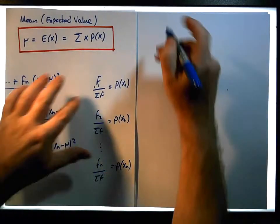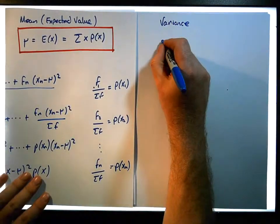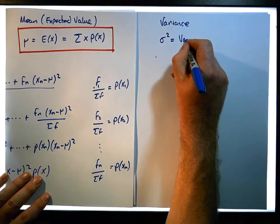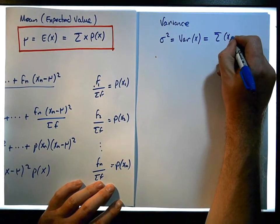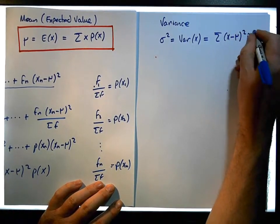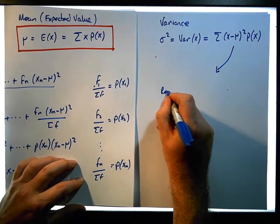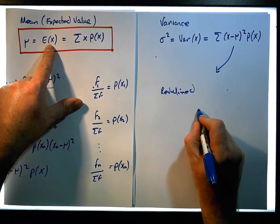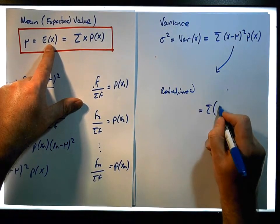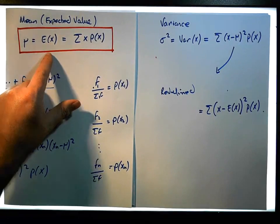So here is the variance formula for a discrete distribution. The variance, sigma squared, also written as Var(x), equals the sum of (x minus mu) squared times P(x). Since mu is the expected value of x, this can also be written as the sum of (x minus the expected value of x) squared times P(x). That is the variance formula.